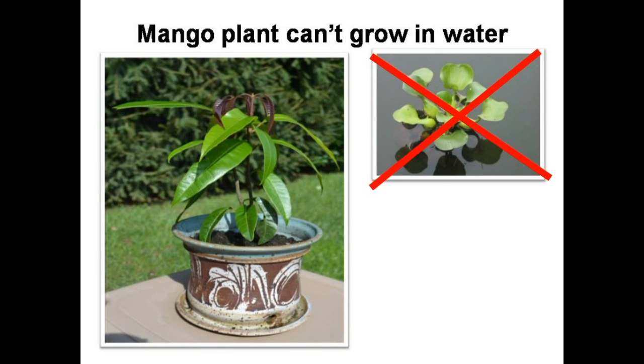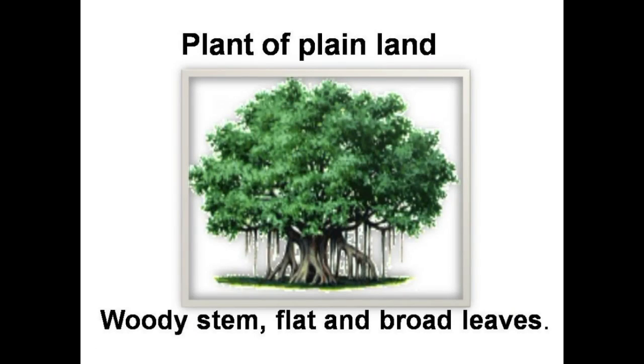Trees that grow in plain land have woody stems and flat, broad leaves. They are shaped like an umbrella, like the banyan tree, mango tree, etc.